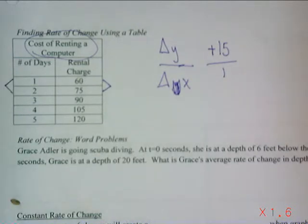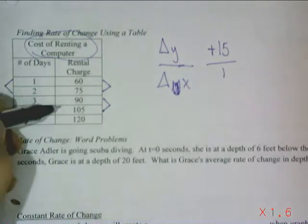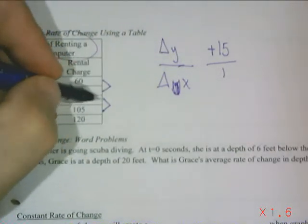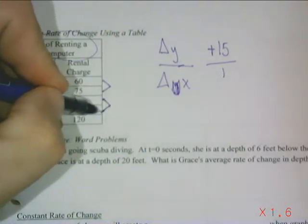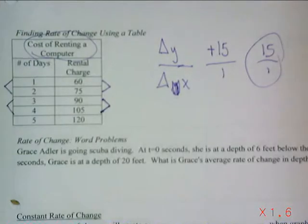If I pick another number, it should stay the same. Let's say I pick this 90 over 105. If I decide to pick these numbers, the difference to go from 90 to 105 is still 15. And to go from 3 to 4, it's 1. So it's still $15 per day.